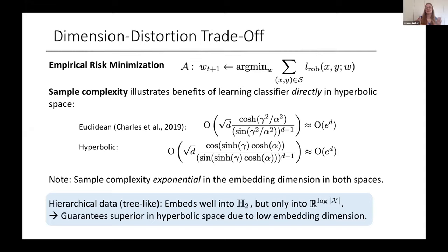But for the sake of argument, let's compare two and log of the size of the tree. And then based on that, we can compare the guarantees that we get in both spaces. And we see that the lower embedding dimension actually allows us to achieve superior guarantees in hyperbolic space. And this can be made much more precise. In the paper, we really rigorously prove that and show all the required geometric arguments in showing that result.